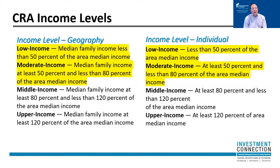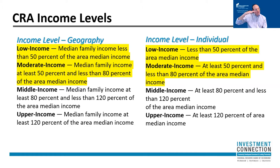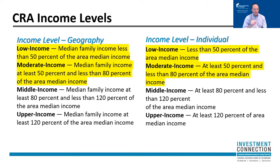When we talk about low and moderate income, we're talking about individuals or households making 80% or less of the area median income for their community, which we find through census tract information. That's who we're talking about — when we say LMI, we're saying that target point of 80% or less in terms of income. We're focused for the purposes of Investment Connection and the Community Reinvestment Act on low and moderate income households, individuals, and communities.